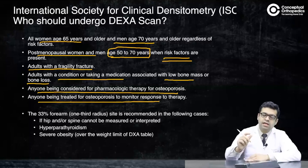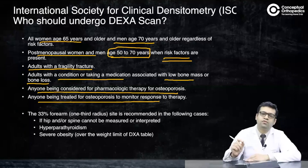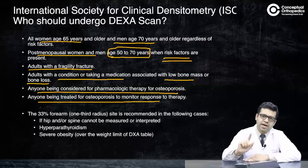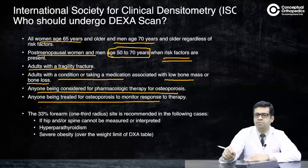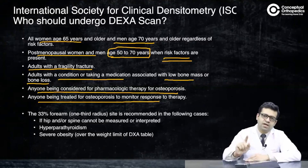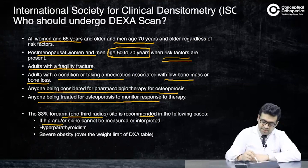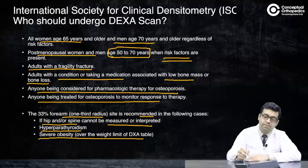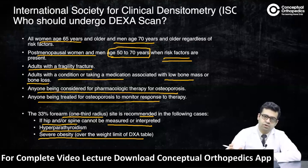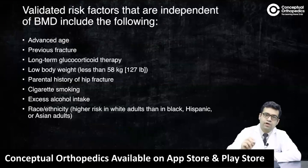The neck of femur is the most important site for checking bone mineral density. The lumbar spine has its own advantage because changes in BMD in response to treatment appear quickest there, so it is preferred for follow-up monitoring. The third measurement site is the distal radius. Distal radius measurement is recommended when the hip and spine cannot be measured or interpreted, when the patient has hyperparathyroidism, or when severe obesity prevents the patient from fitting inside the DEXA machine.